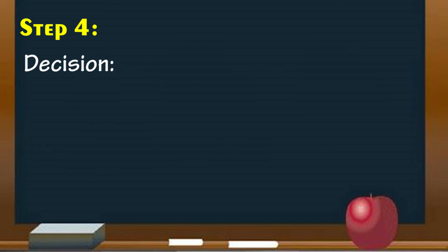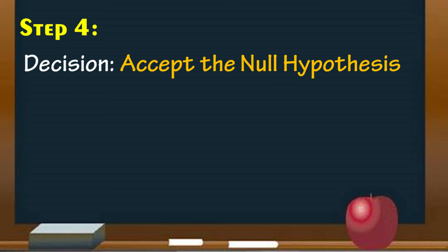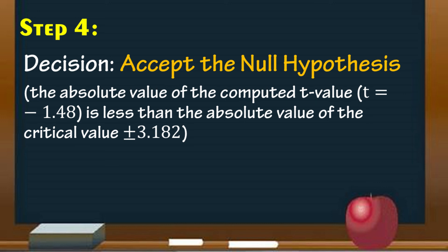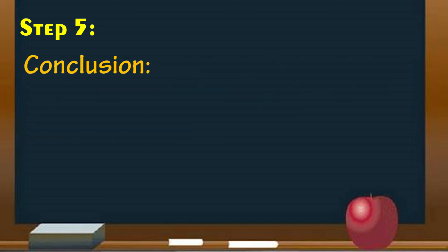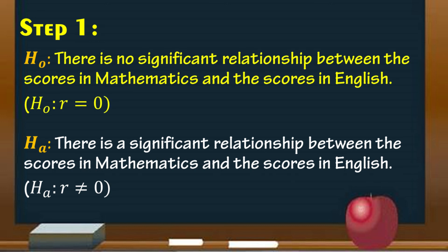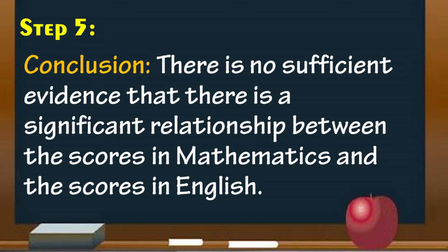Step number four: decide whether the null hypothesis is accepted or rejected. Compare the test value, or T-value, and the critical value. Since the absolute value of the computed T-value is less than the absolute value of the critical value, therefore the null hypothesis is accepted. Step number five: make a conclusion. Since there is no significant relationship between the scores in mathematics and the scores in English, we can say that there is no sufficient evidence of a significant relationship between the scores in mathematics and the scores in English.